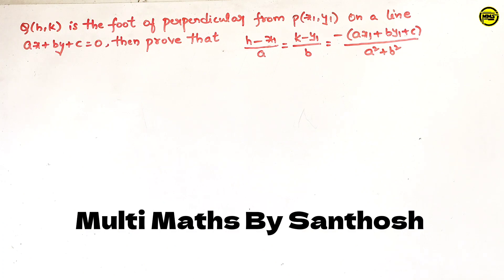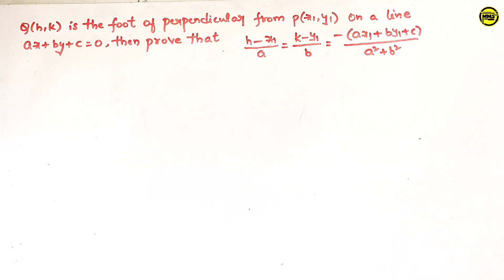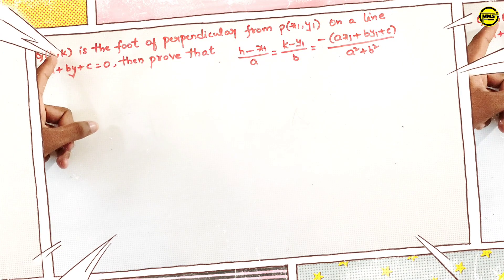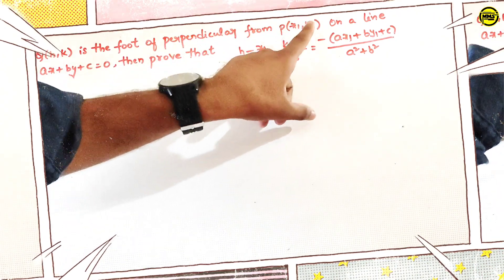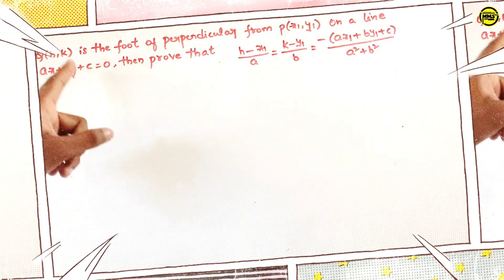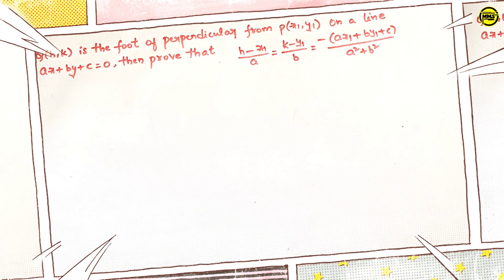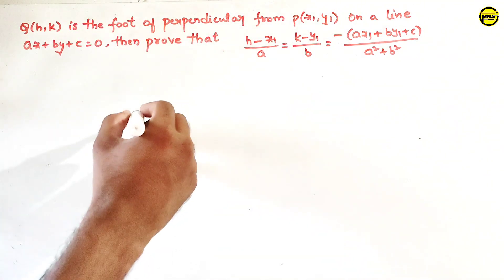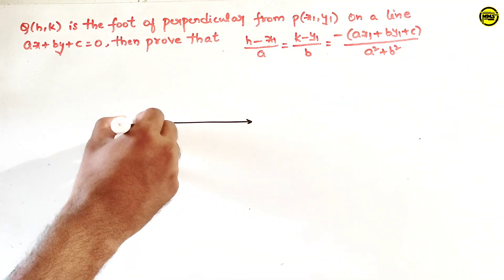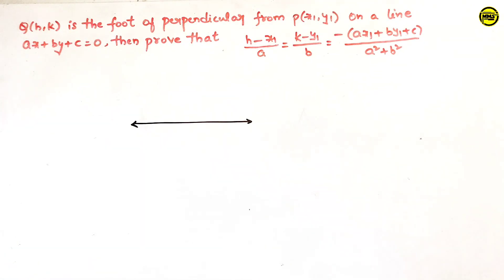I will talk to you about the Intermediate Public Examinations. I will use the theorem statement: if Q is the foot of the perpendicular from P on a line ax plus by plus c equal to 0, then prove that this condition is true. We already have the image of the point with respect to the straight line. We will talk about the theorem.